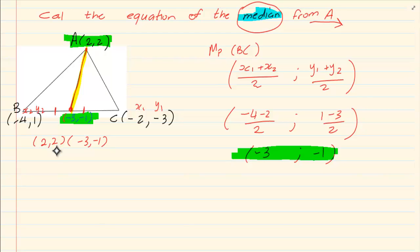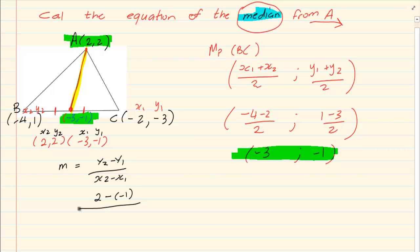To get the equation of a straight line you need the gradient. So we are going to say M is equal to y2 minus y1 over x2 minus x1, using the correct information. So I am going to say 2 minus minus 1 all over 2 minus minus 3. So what do we have? We have 3 all over 5. So our M is equal to 3 over 5.